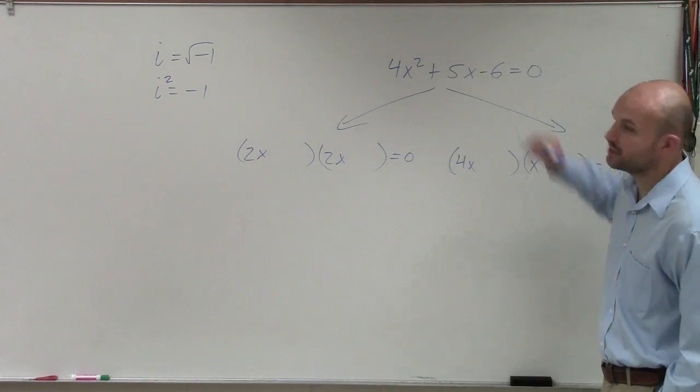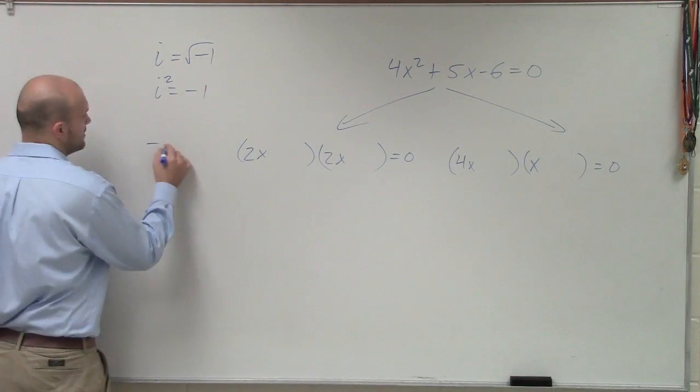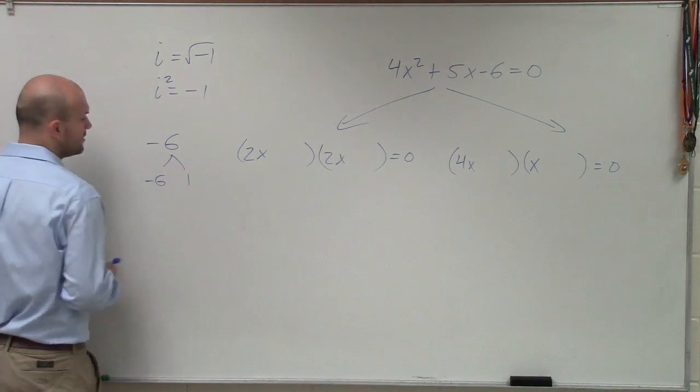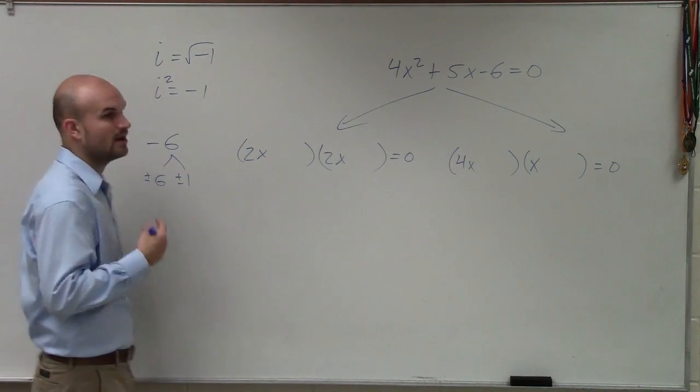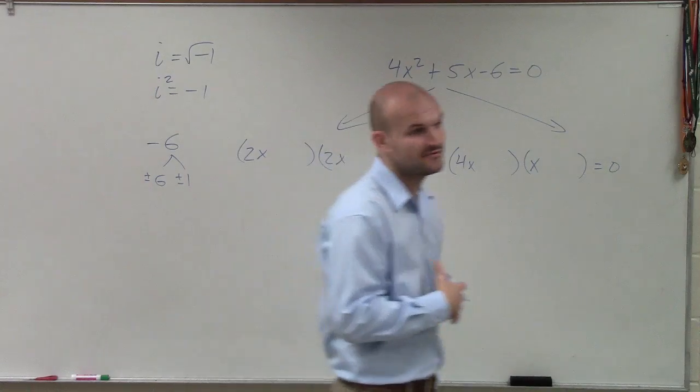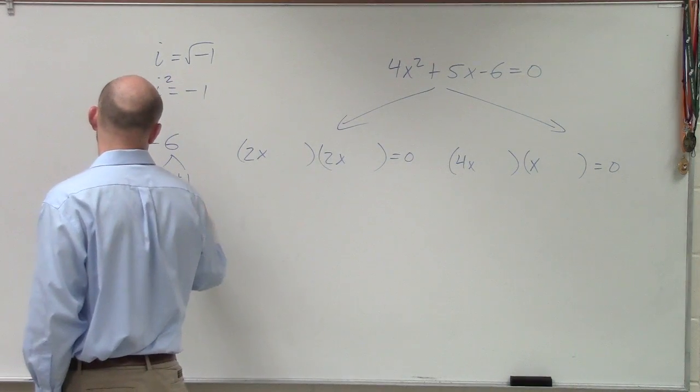And now we need to see, what two numbers multiply to give us negative 6? Well, we have a couple options with that. Negative 6, we could do negative 6 and 1. Actually, it could be plus or minus 6 and plus or minus 1, right? One has to be negative for it to give us a negative 6. Or we could do plus or minus 3 and plus or minus 2.